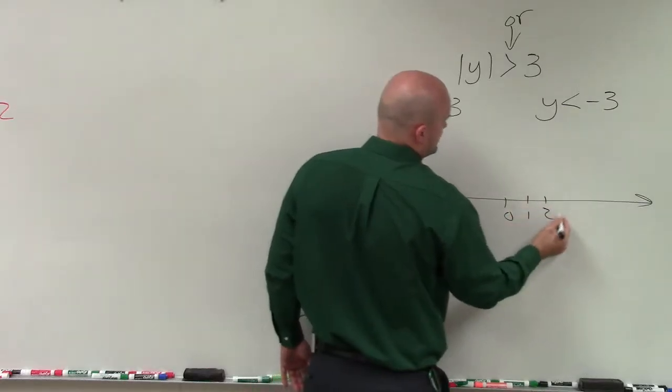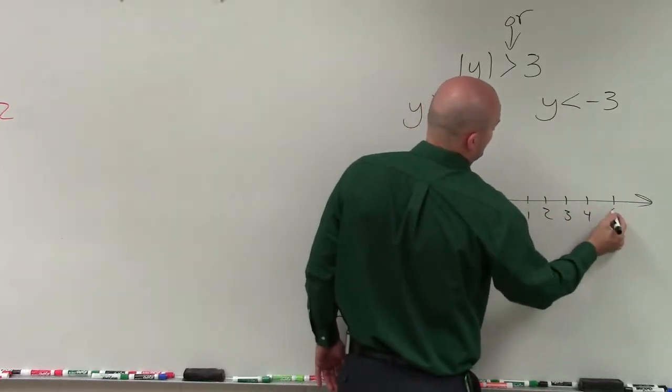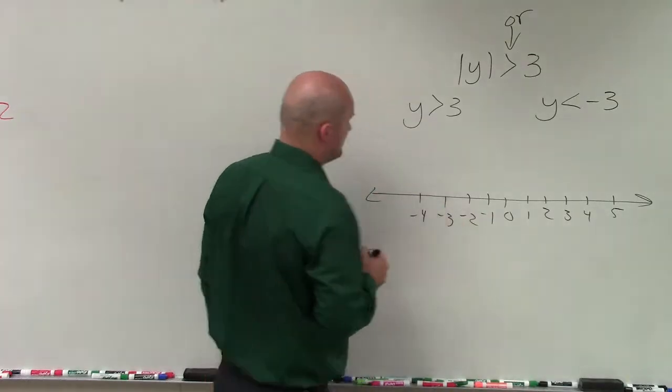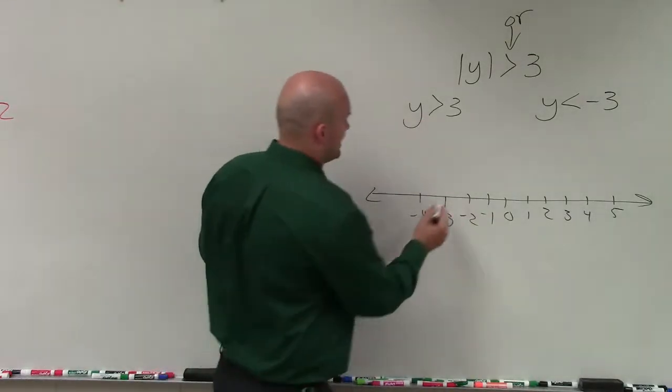Let's start at 0. So I have 1, 2, 3, 4, 5, and negative 1, negative 2, negative 3, negative 4. Okay, so now I'm going to put a point at each one of these.